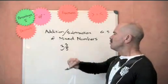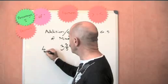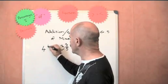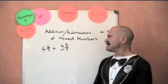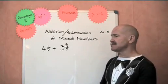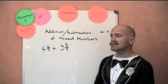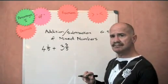Now, when we're adding mixed numbers, say we have 4 and 1 fifth plus 3 and 3 fifths. How do we do that? Well, that's pretty easy really, because what we're going to do is we're going to add the whole numbers.